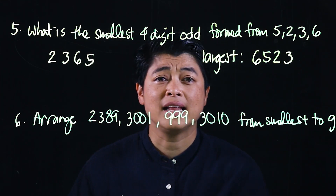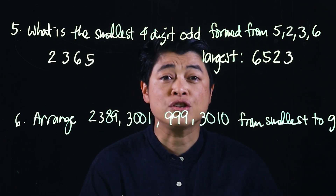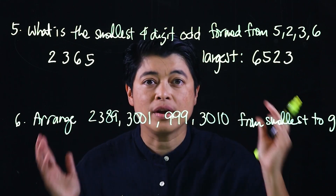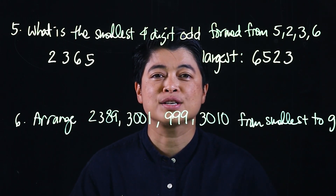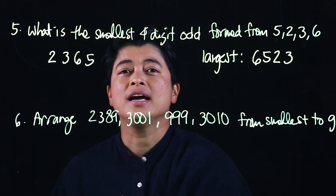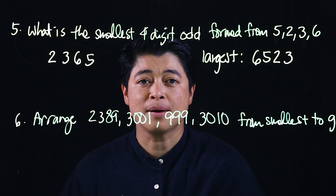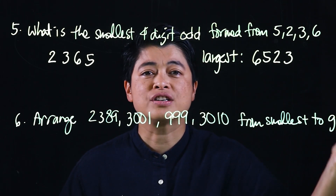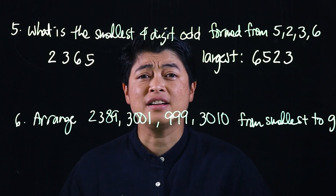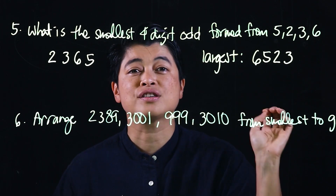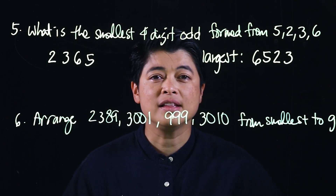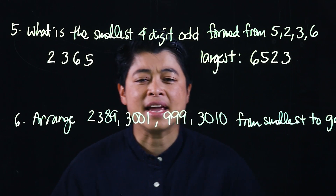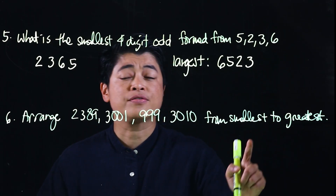If we follow these guidelines and teach our kids so they understand, they don't have to invent the process. To summarize: if it says smallest, start with the smallest number; if it says odd, end with the smallest odd number.